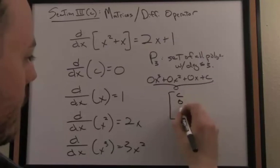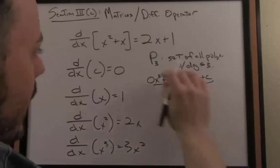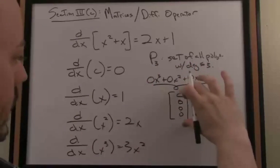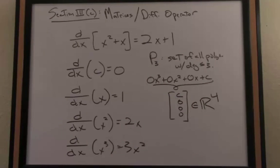So, C, and then the coefficients I write in that order as the encoded form. So this would be an element now of P3, but now I've written it explicitly as a four-dimensional vector, so we'll say as an element of R4.